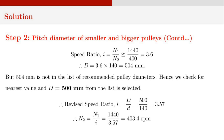The revised speed of the larger pulley N2 equals N1 divided by I, that is 1440 divided by 3.57, giving N2 as 403.4 RPM.